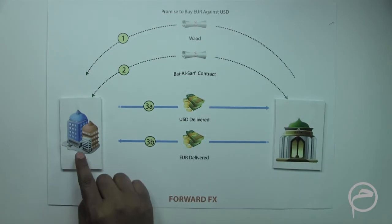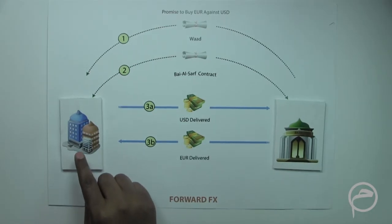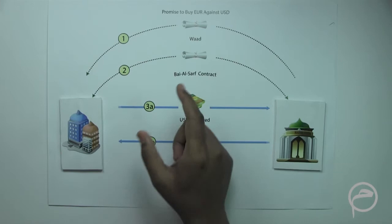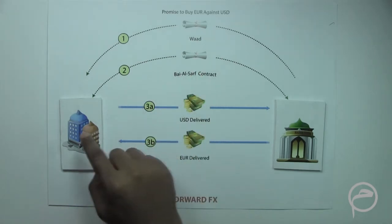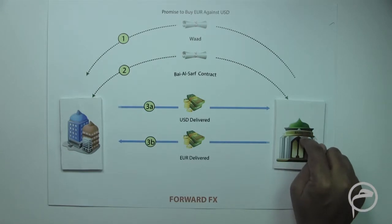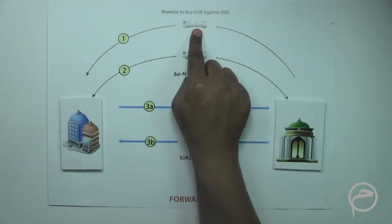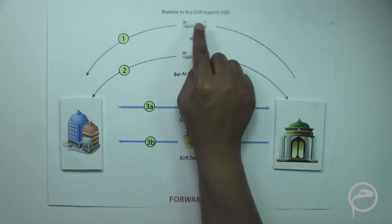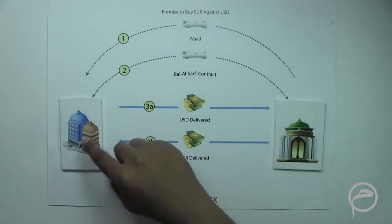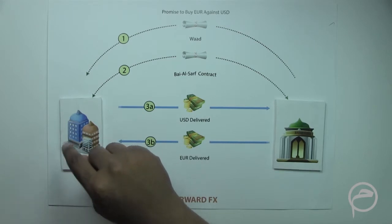For example, there is a corporate which wishes to hedge its euro currency rate exposure against the dollar. Therefore, it seeks a unilateral undertaking from an Islamic bank to sell the required amount of euro on a specified future date for dollars at a promised exchange rate.